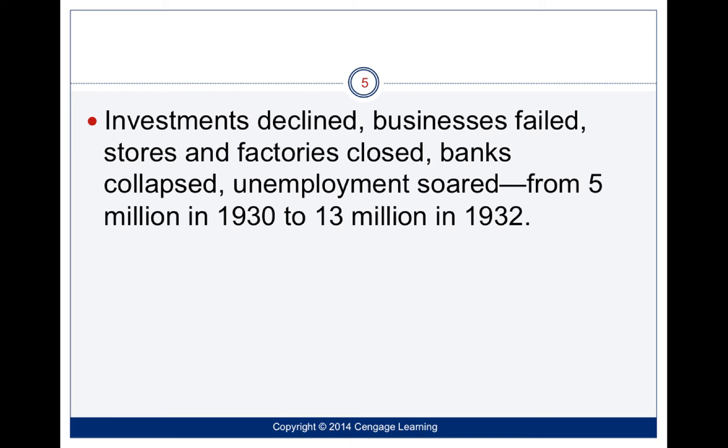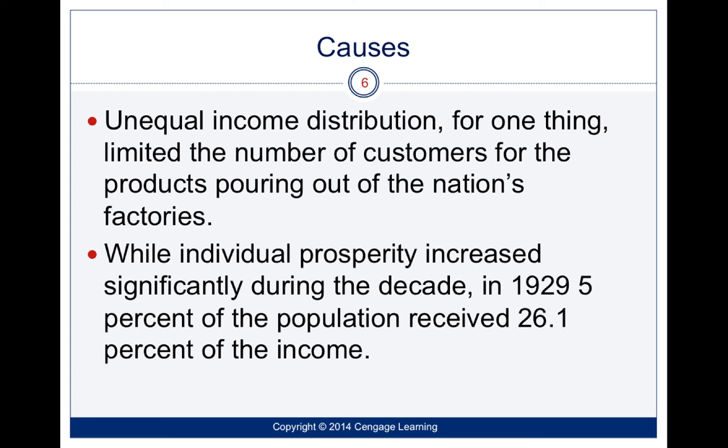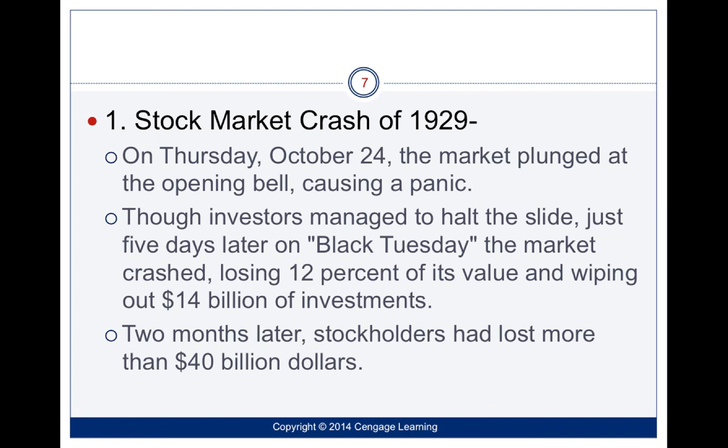Some of the causes: we actually had an unequal income distribution, which limited the number of customers for the products pouring out of our nation's factories. Individuals' prosperities increased significantly during that decade, with 5% of the population receiving 26.1% of the income. On October 24th, the market plunged and caused a panic. They were originally able to halt the slide, but then five days later, Black Tuesday happened and the market crashed.